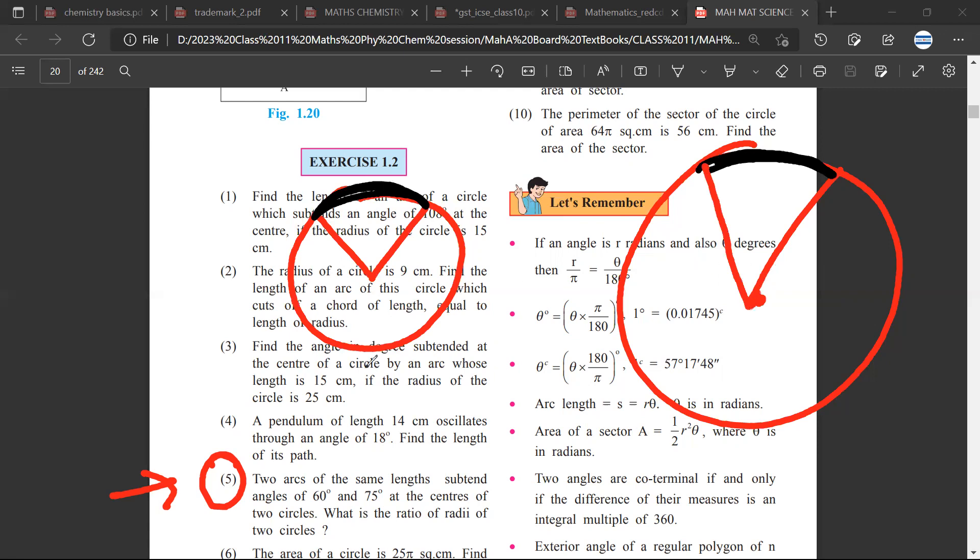Two arcs of same length subtend angles of 60 degree and 75 degree. This would be 60 degree, this would be 75 degrees. The lengths are equal.